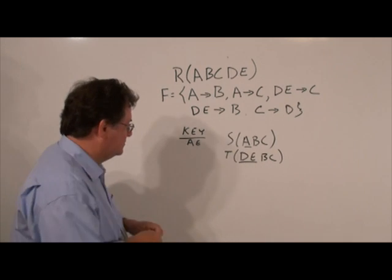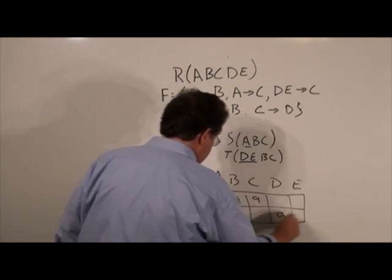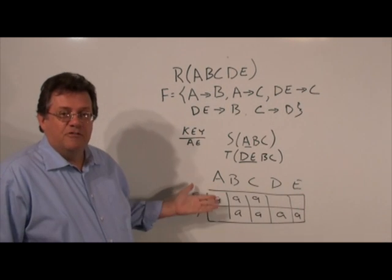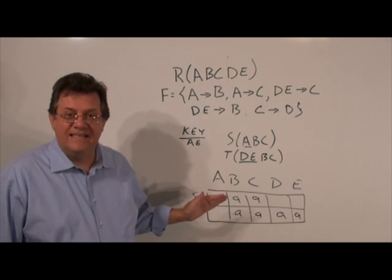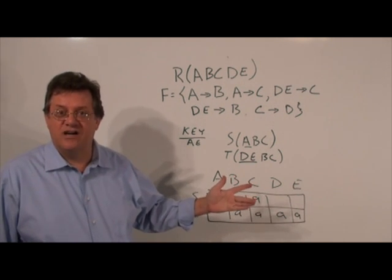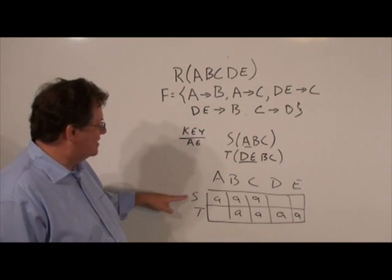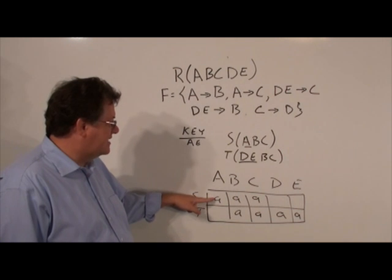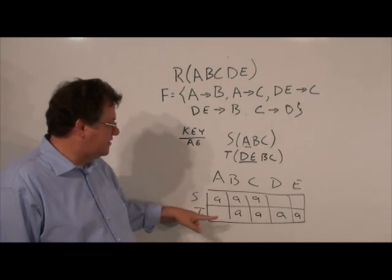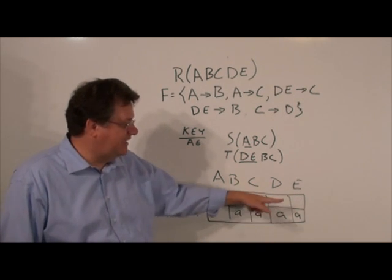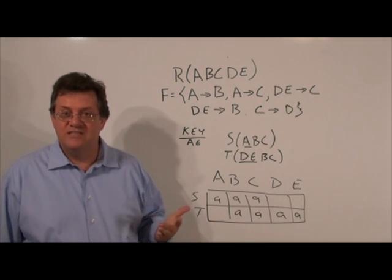Well, let's take a look. Here I've created the table with the distinguished variables. As you recall, we're trying to get at least one row. All we need is one row with all distinguished variables and indeed it will be lossless. So I created sub-schema S with distinguished variables ABC and sub-schema T with distinguished variables BCDE. Now we go through our functional dependencies and see whether or not we can add any more distinguished variables.